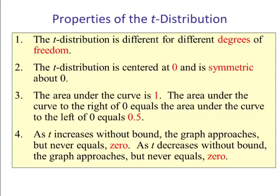Number four: As t increases without bound, the graph approaches but it never does equal zero. We call this an asymptote. As t decreases without bound, the graph approaches but it never does equal zero.